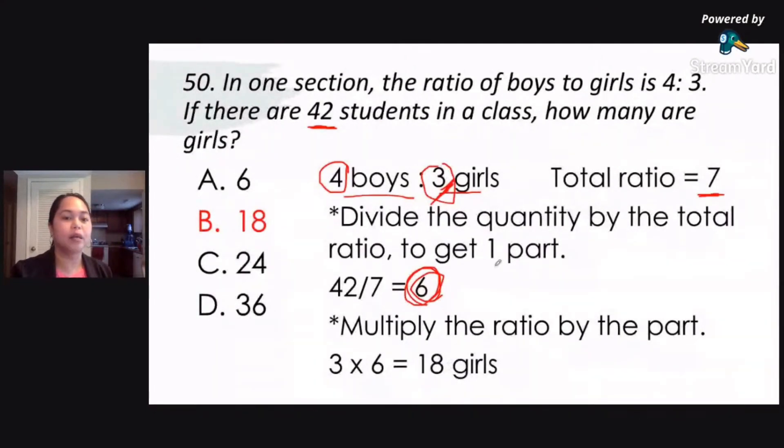Now, if the question is how many boys are there, then you are going to multiply 4 by 6. Okay, in that case, there are going to be 24 boys. Okay, so 24 boys. So if you are going to check 24 plus 18, that would give us 42. So that means tama ang ating sagot.